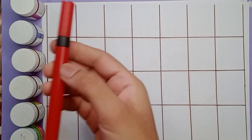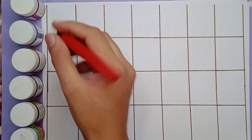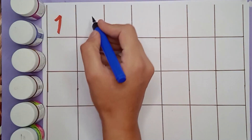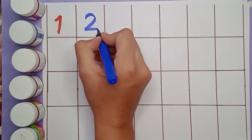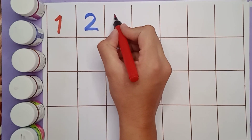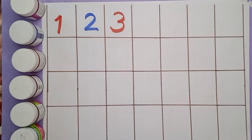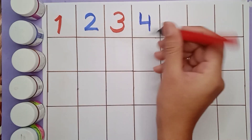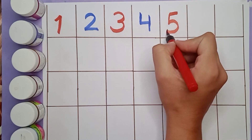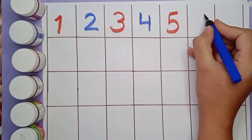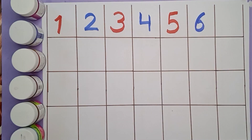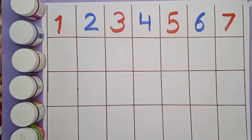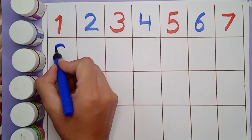Start writing. One, red color. Two, blue color. Three, red color. Four, blue color. Five, red color. Six, blue color. Seven, red color. Eight, blue color.